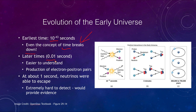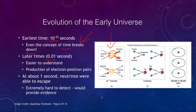At about one one-hundredth of a second, understanding becomes a little easier. This is the time when electron-positron pairs would have been forming — two gamma rays could come together and create an electron and a positron, and then that positron and electron could meet up with another one and re-form two gamma rays. It was a constant switching back and forth between matter and energy.